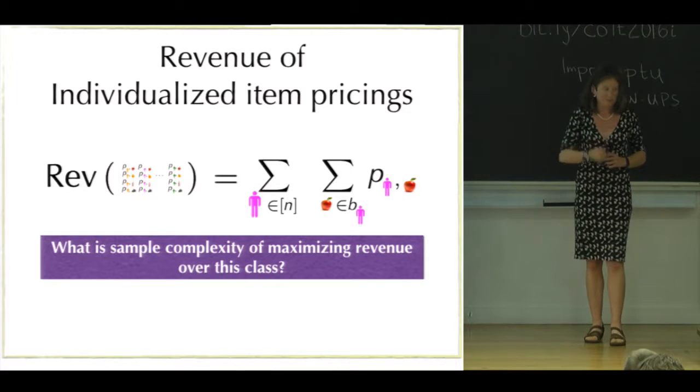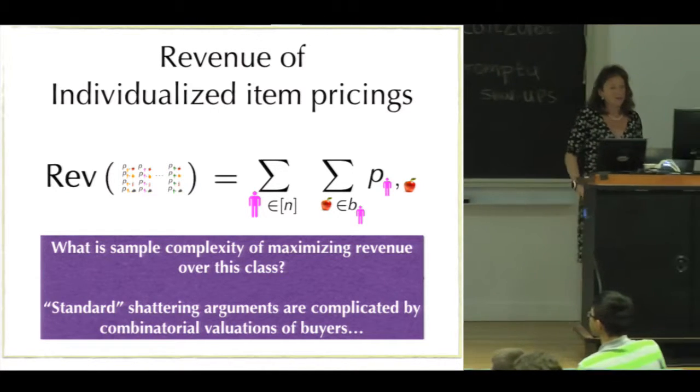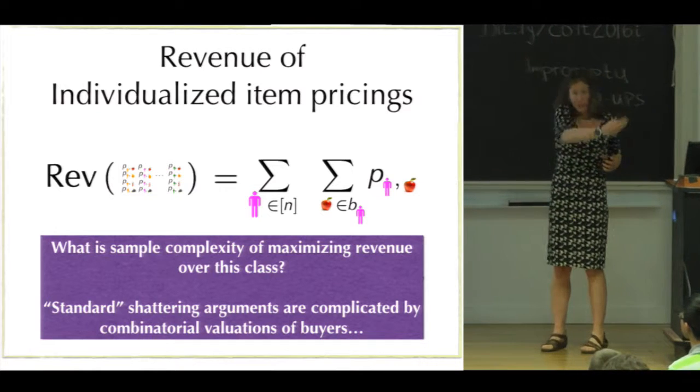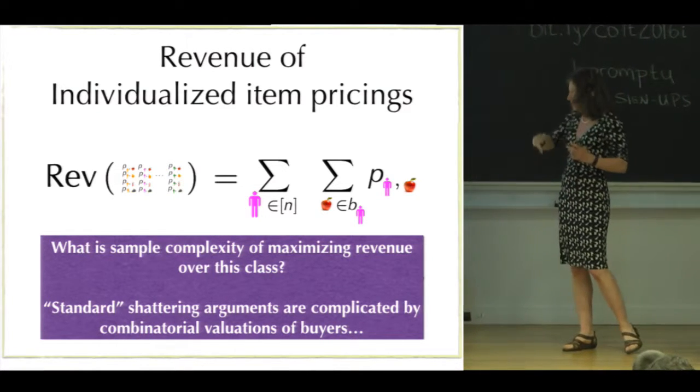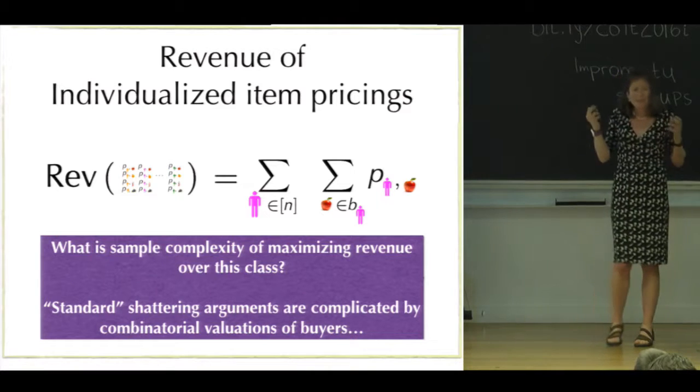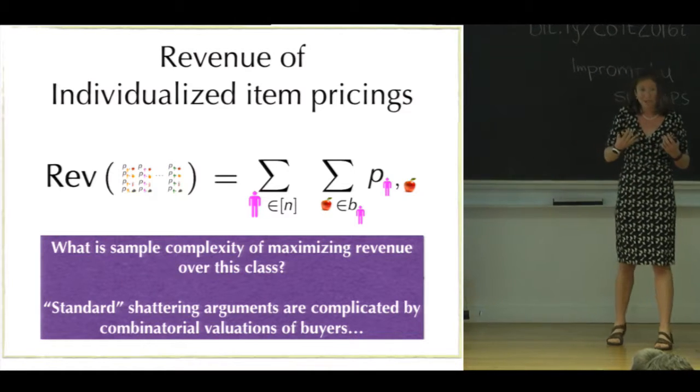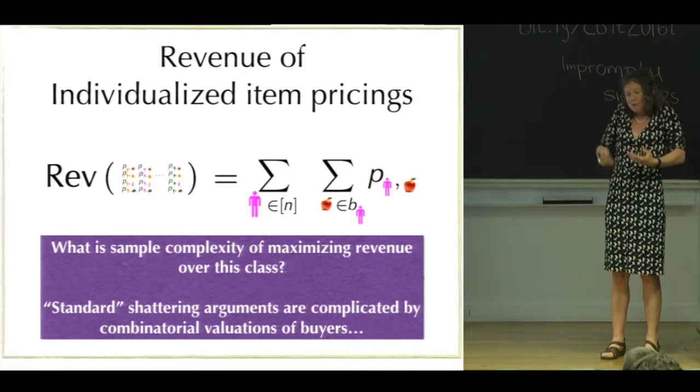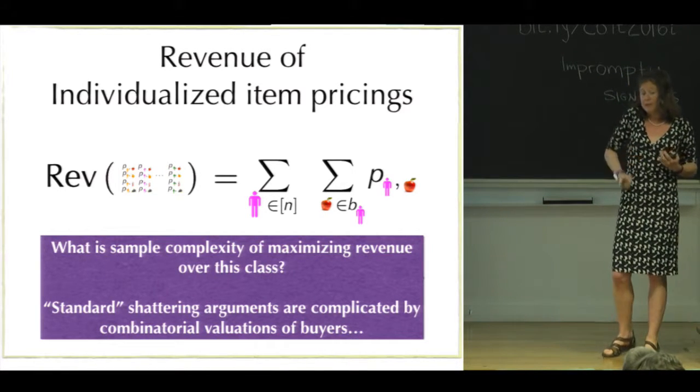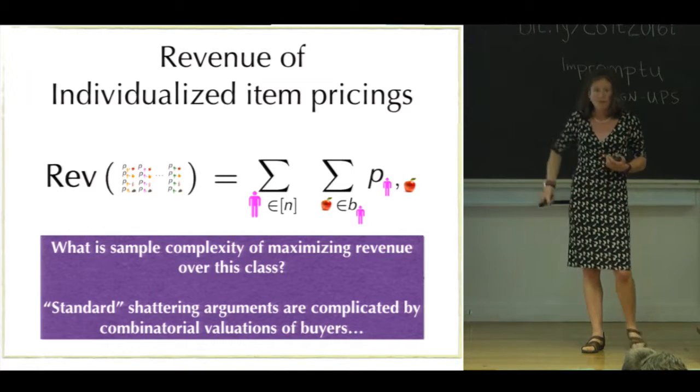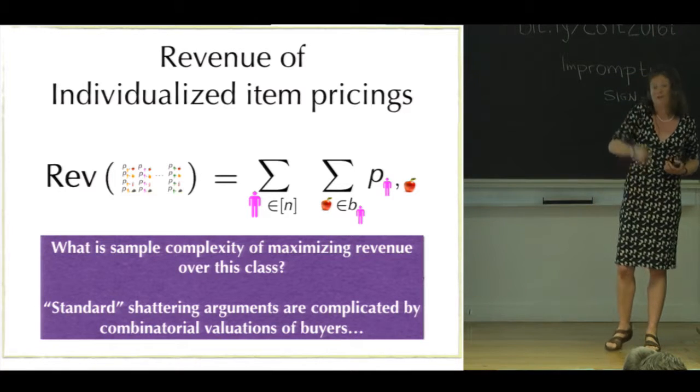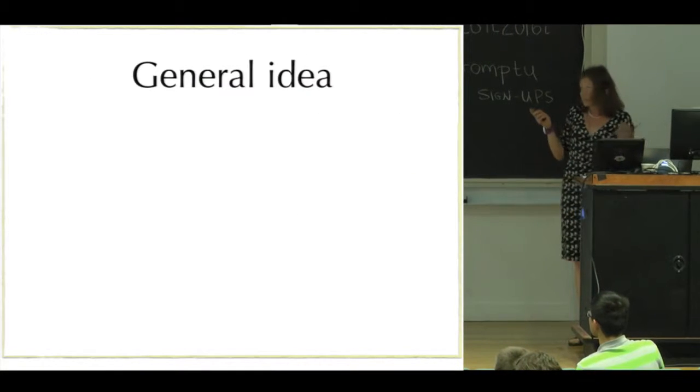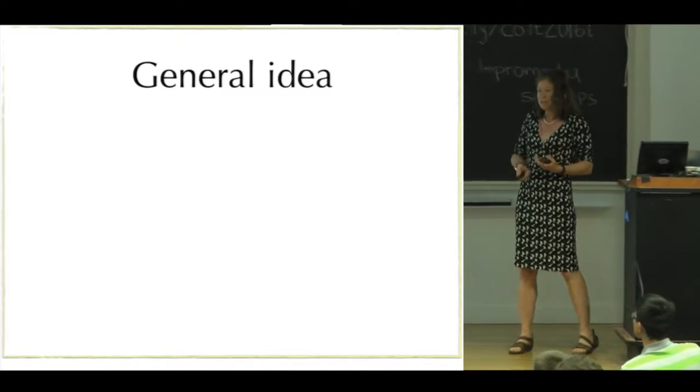I want to note that because I've made no assumptions such as modularity or unit demand or additivity, standard shattering arguments are kind of annoying in this setting because buyers' valuations don't separate nicely across items. If I change the price for apples, that might change the demand for grapes in some non-intuitive way. So the general idea of this paper is one that you can take home and apply to your favorite auction theory homework assignment.